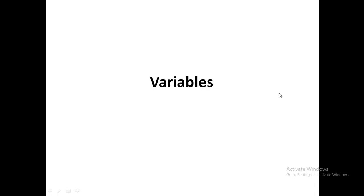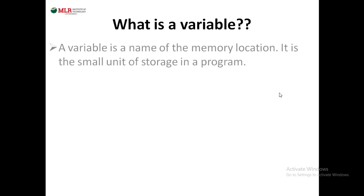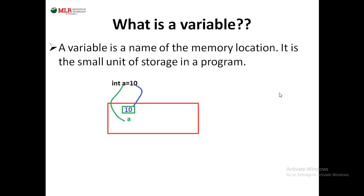In this session we are going to talk about variables. A variable is a name of the memory location and it is a small unit of storage in a program. Suppose if you are declaring any variable, that variable holds some value. That value will be stored in computer memory. That memory location is called a variable.